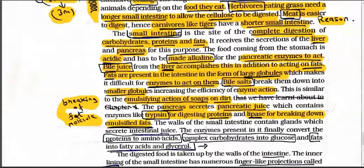The enzymes in intestinal juice finally convert proteins into amino acids, complex carbohydrates into glucose (C6H12O6), and fats into fatty acids and glycerol. So three things are converted: proteins to amino acids, complex carbohydrates to glucose, and fats to fatty acids and glycerol. This is done by the small intestine.